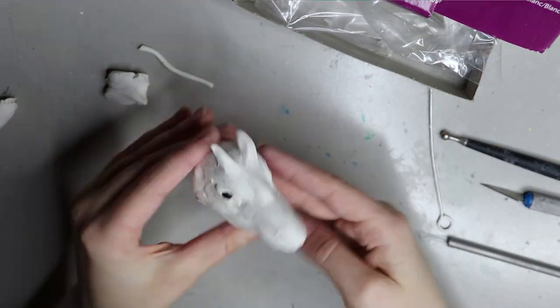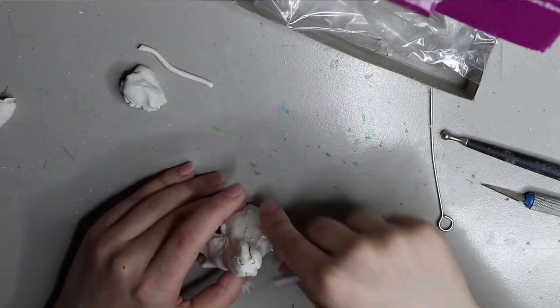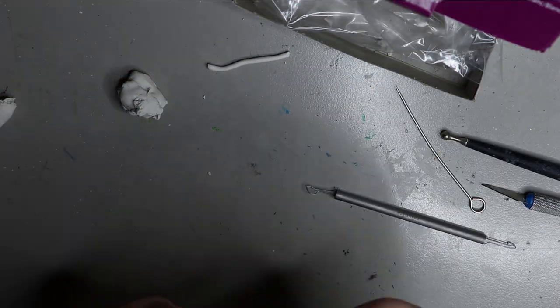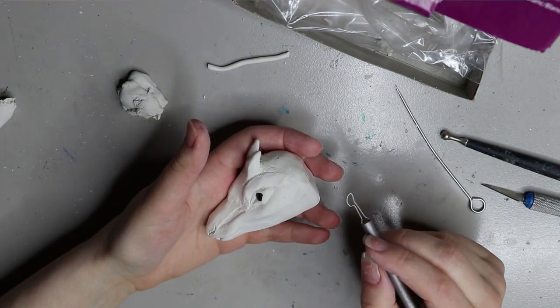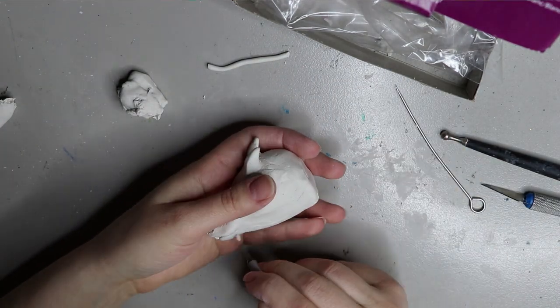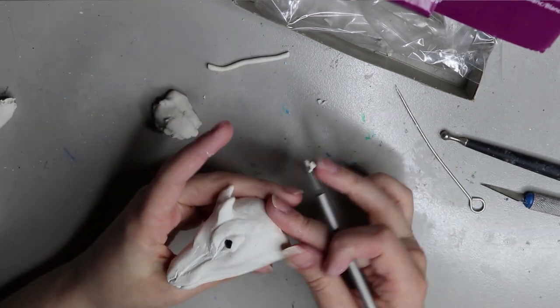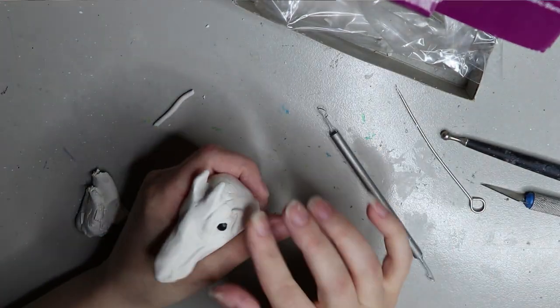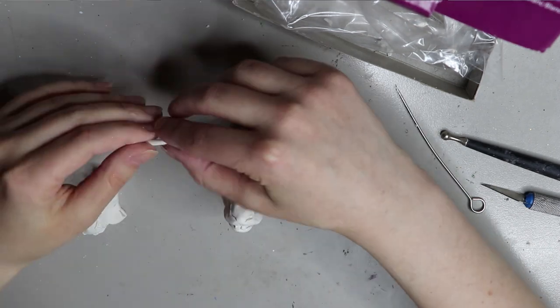I couldn't recommend looking at reference pictures enough to get to know how an animal's structure is. I do it all the time with anything that I sculpt. I make sure I study the animal's structure and any characteristics it has so I can replicate it in my sculptures. I've just built up the bottom jaw a little bit more just to shape it out and make it look more like an Okapi.